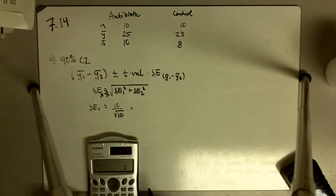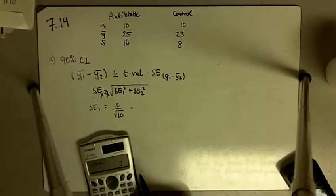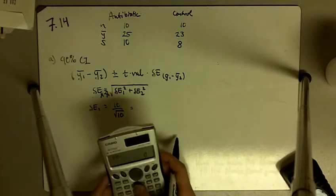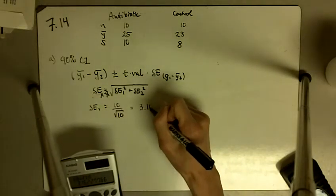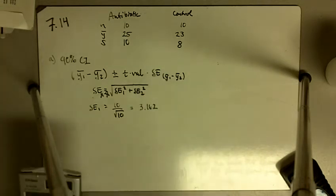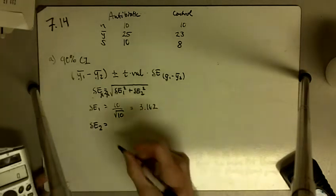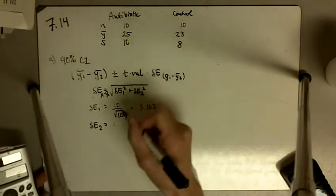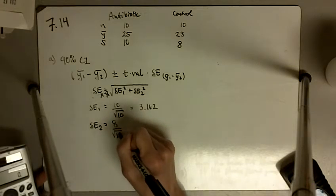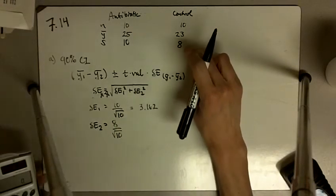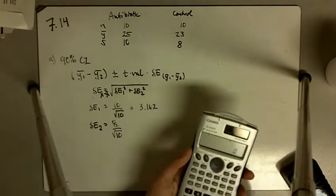The square root of 10 is 3.162. And for group 2 we have 8 divided by the square root of 10 — that is, standard deviation divided by the square root of our sample size.